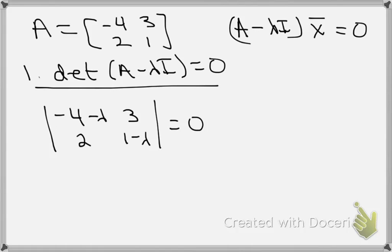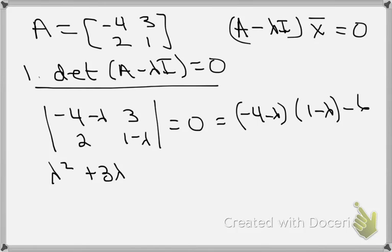When we take the determinant of this matrix we get (-4-λ)(1-λ) - 6 = 0. Rearranging and simplifying we end up with λ² + 3λ - 10 = 0. This is our characteristic polynomial.